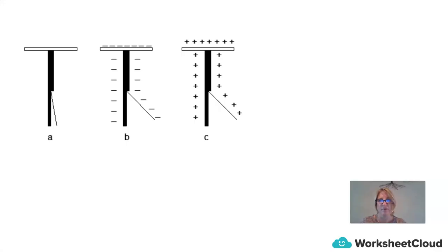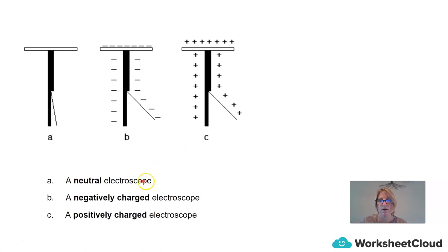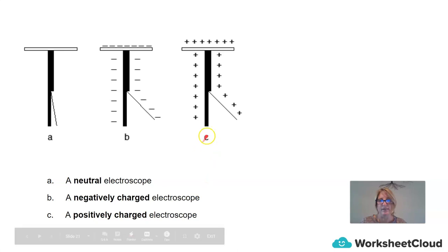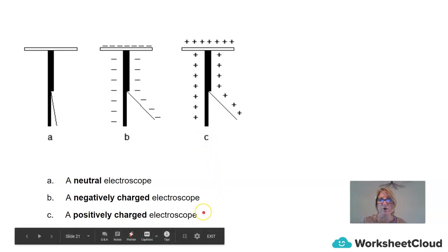Are you able to explain what is happening in each of diagrams A, B, and C? A shows a neutral electroscope. B shows a negatively charged electroscope. And C shows a positively charged electroscope.